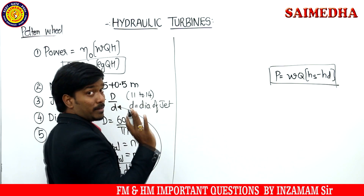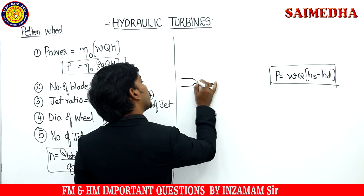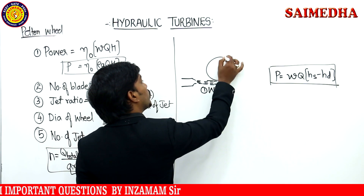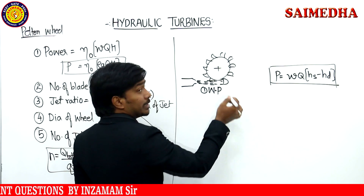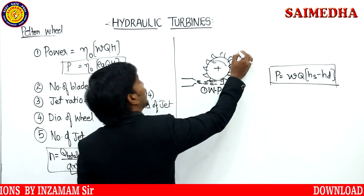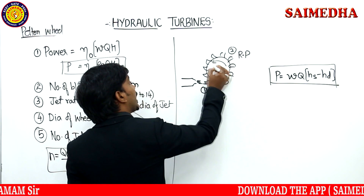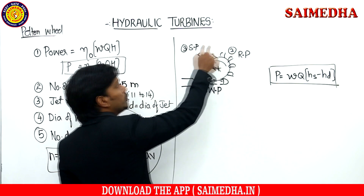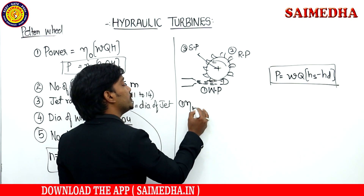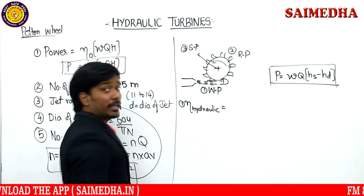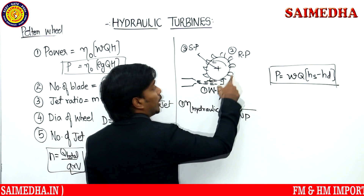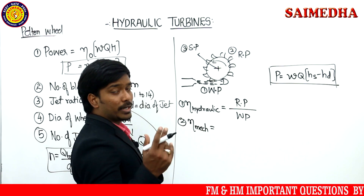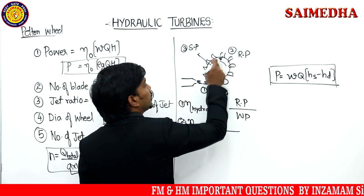Now let's remember the formula for efficiency. Think of it this way: water enters the nozzle — that is water power. When water power is applied to the turbine blades, the turbine rotates. This power is called runner power. After the runner, the next power output is shaft power. So the sequence is: water power → runner power → shaft power.